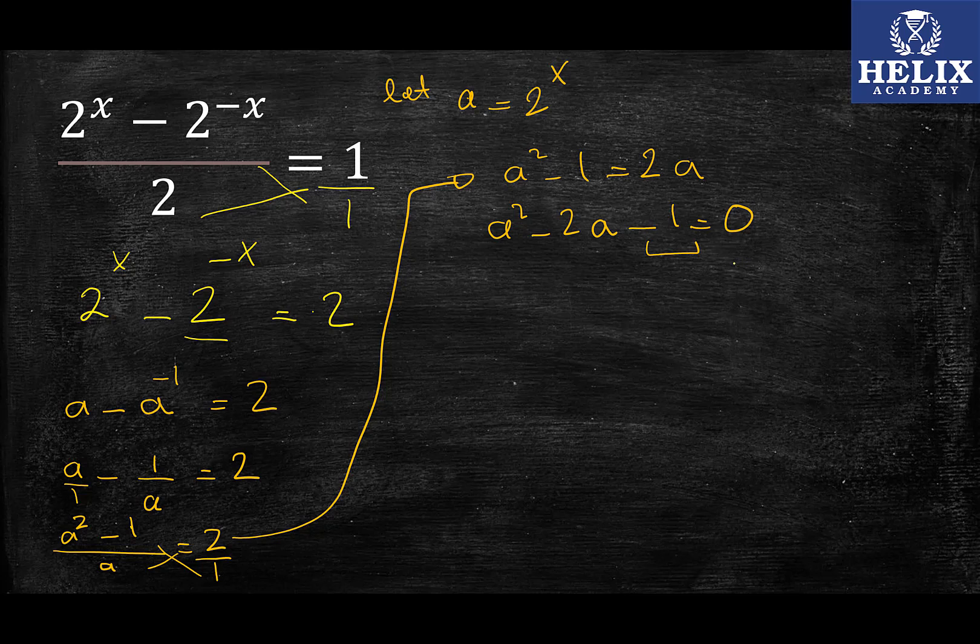Right? If I have negative 1 times negative 1, it won't be, it will give me negative 2 if I add them, but if I multiply them, it will give me a negative number. So therefore, I'm going to write and use my quadratic equation.